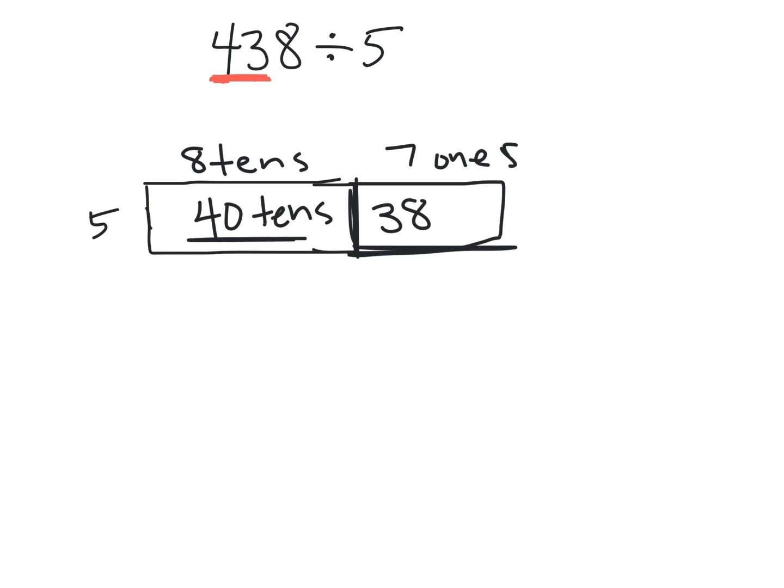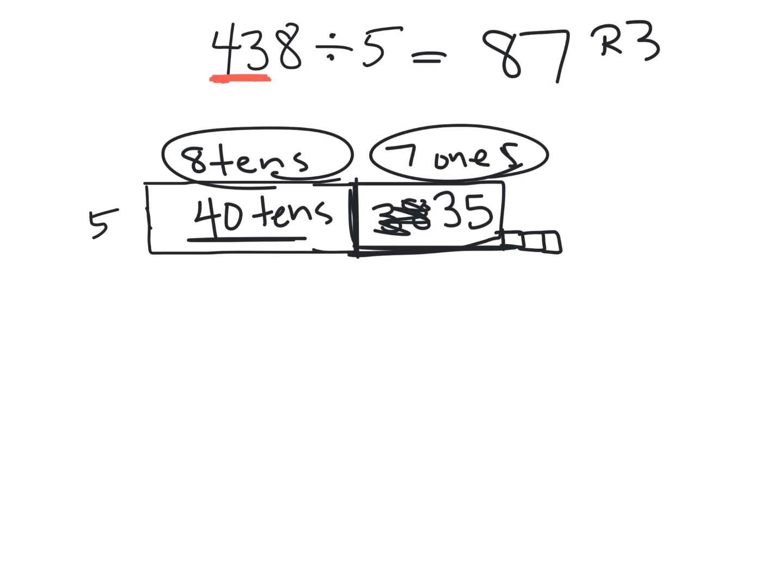It's going to be seven ones, or units, and that gives us 35. That means we've used up 35 in here, and we have three little units left over. So there is our answer. So our answer is eight tens plus seven ones. So that's 87 and we have a remainder of three.